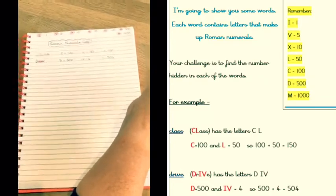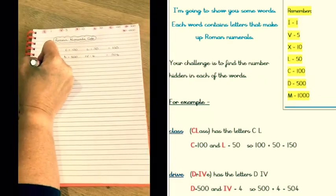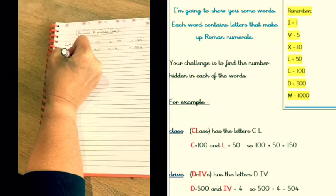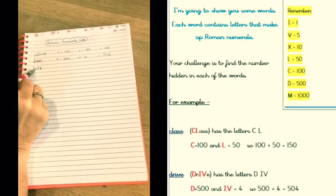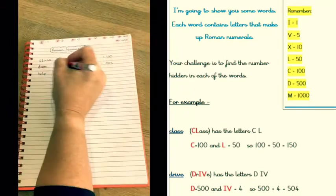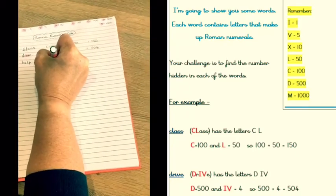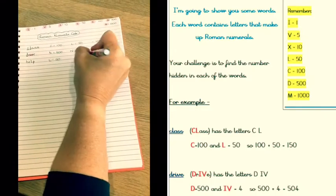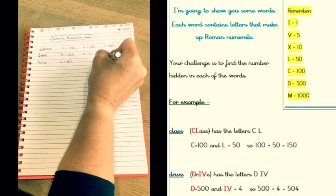Let's try one more: 'help.' H isn't a Roman numeral, E is not, but L is 50, and P isn't. So 'help' is worth 50.